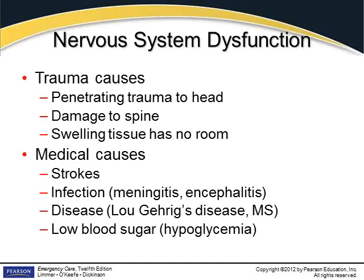Medical causes of nervous system dysfunction include strokes and infections like meningitis. Meningitis is a particularly ugly disease in some forms — it can be fatal. There are two major types of strokes: one is a blockage that causes areas of the brain to become hypoxic, and the other is a major bleed, often referred to as a brain aneurysm, which damages tissue and increases pressures.